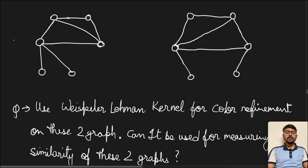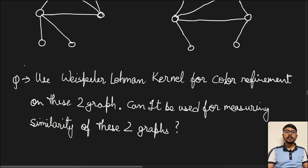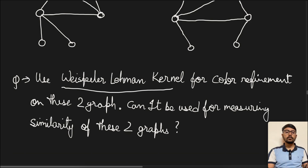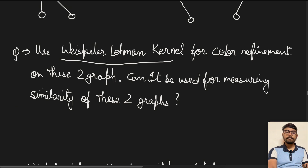Today we are going to look at a new topic which relates to comparison of two graphs and identifying their structural isomorphism using the Weisfeiler-Lehman kernel. So let's read the question first. We are given two graphs visible on your screen. Use the Weisfeiler-Lehman kernel for color refinement on these two graphs — can it be used for measuring similarity of these two graphs?